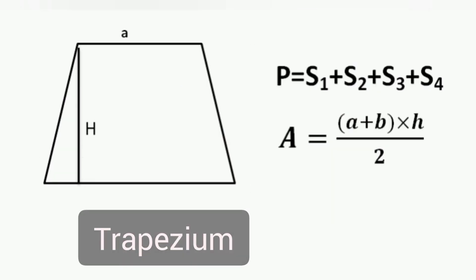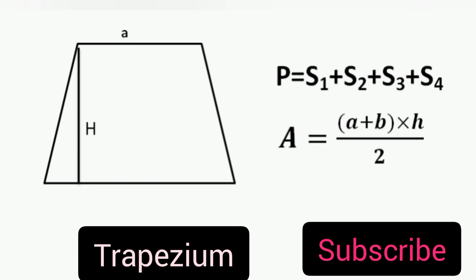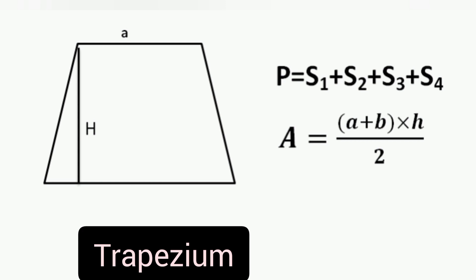Number 5: Trapezium. Trapezium is a quadrilateral with one pair of parallel sides. Perimeter of trapezium is equal to side 1 plus side 2 plus side 3 plus side 4. Area is equal to (big base plus small base) times height divided by 2.